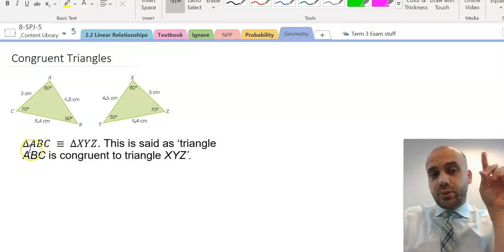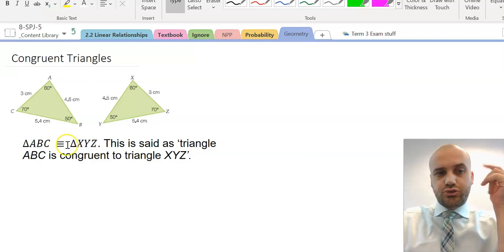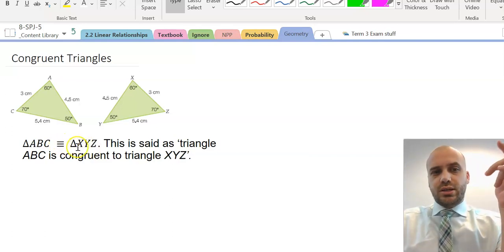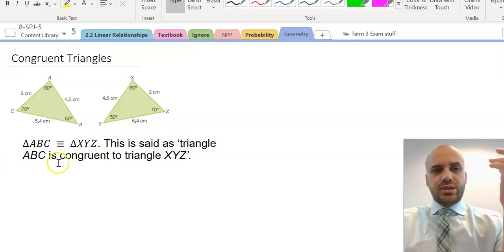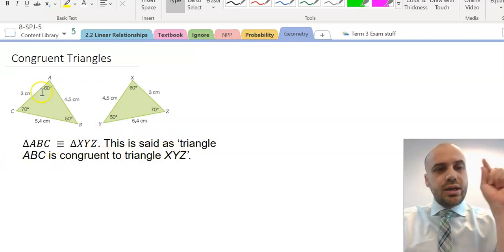We can write this in the following way. Triangle ABC is congruent to triangle XYZ. It's important to put our little triangle shape here. It's important that you're matching up your symbols.